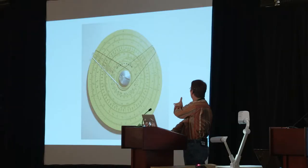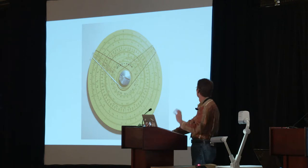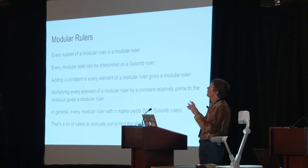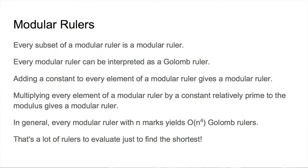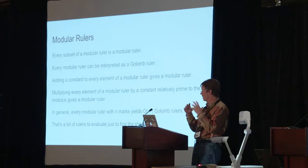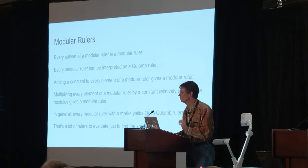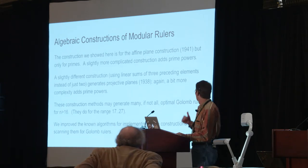This is really cool because I can now massage this modular ruler in a large number of ways to generate additional rulers. I've got a circular ruler and I can measure distances around the circle. The key property is that every subset of a modular ruler is a modular ruler, and every modular ruler is a Golomb ruler. Also, if I multiply every element of a modular ruler by a constant relatively prime to my modulus, I get a modular ruler back — and from that I can enumerate and derive short Golomb rulers. We've known this for 60 or 70 years and done it a lot.